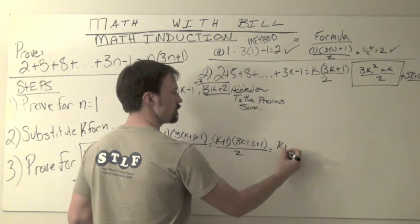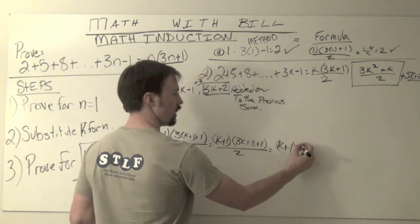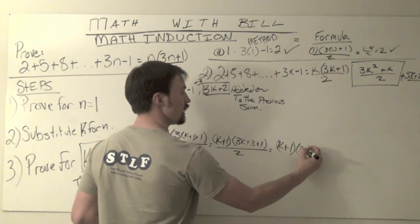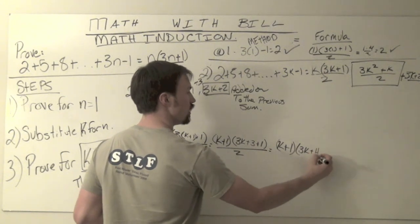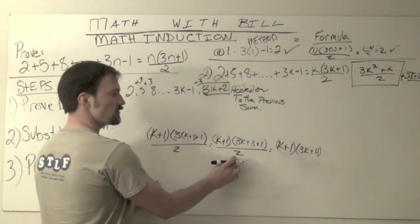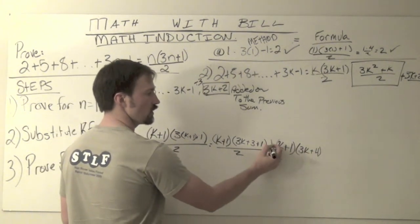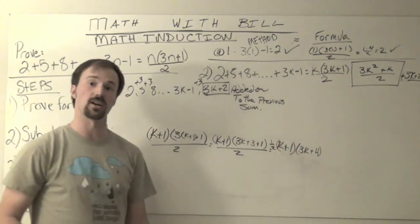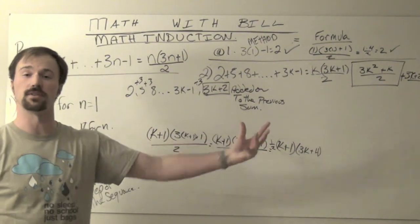And that comes out to k plus 1 times my 3k plus 4. Again, this is all divided by 2. What I'm going to do is bring that out as a constant multiplier in the front. So it's 1 half times each of these terms.